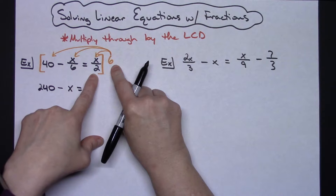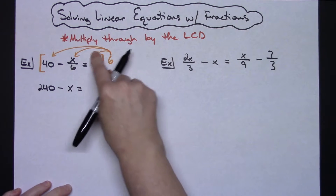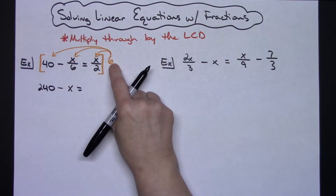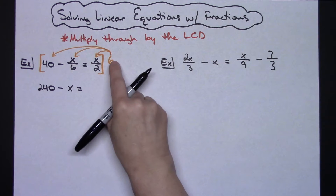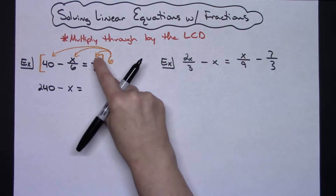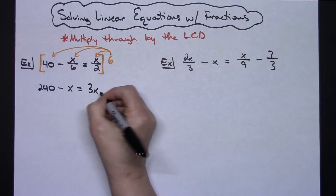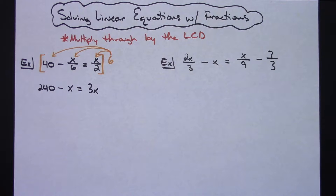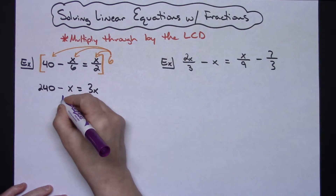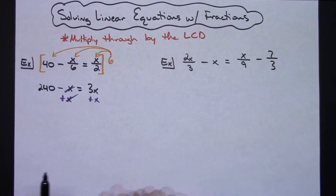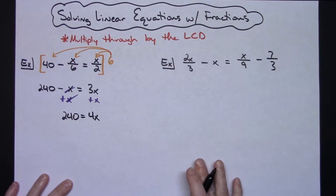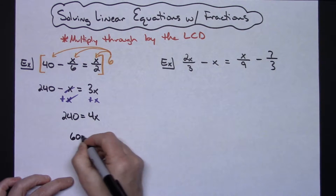For the last term, x over 2 times 6: a shortcut is 6 divided by 2 times the numerator. So 6 divided by 2 is 3, times x, gives me 3x. After multiplying through by the LCD we have a regular equation to solve. I've got x on both sides, so I add x to both sides, giving 240 equals 4x. Dividing both sides by 4, I get x equals 60.